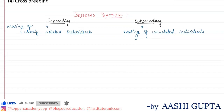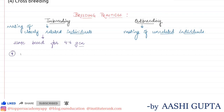Inbreeding involves mating of closely related individuals of the same breed, which have common ancestors up to four to six generations. In inbreeding, when closely related breeds or species are mated, it increases homozygosity.